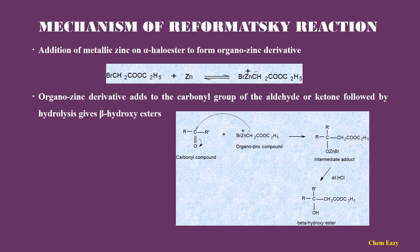Here, let us see the mechanism of Reformatsky reaction. Initially, metallic zinc is added to alpha-bromo ester and produces an organo-zinc derivative. In the next step, this organo-zinc derivative is added to the carbonyl group of aldehyde or ketone and produces an intermediary product. This on hydrolysis gives beta-hydroxy esters.